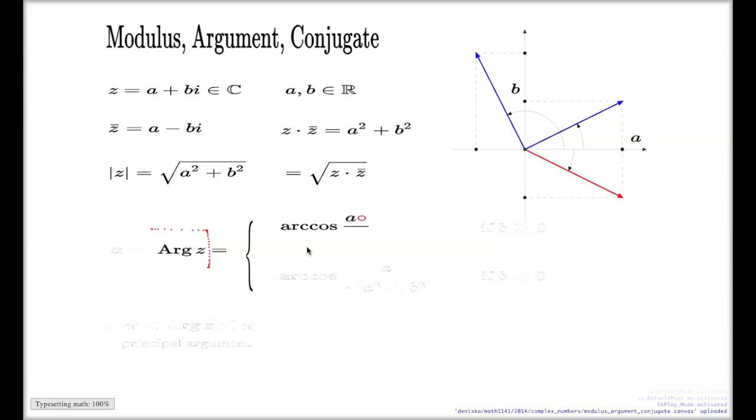The formal definition goes like this: it's either arccos of a over the square root of a² + b² in case the imaginary part is positive, or negative arccos like this in case the imaginary part is negative.